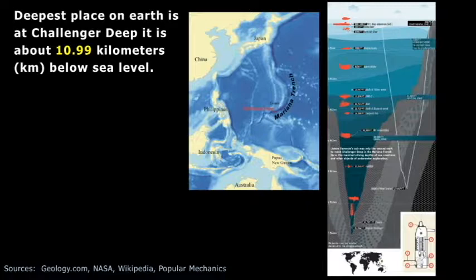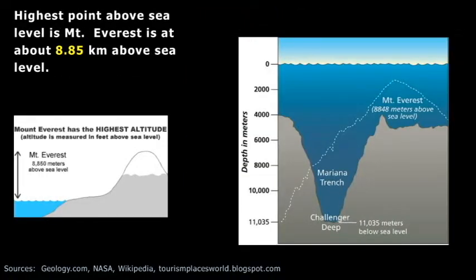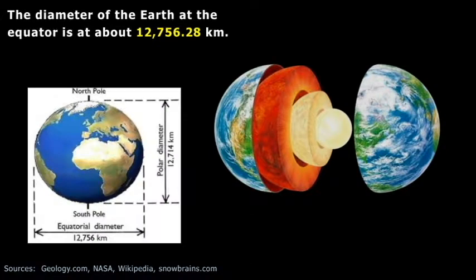The deepest place on Earth is at the Challenger Deep. It's about essentially 11 kilometers below sea level. The highest point above sea level, and I know people debate this, but whatever, the point is at this scale it's minuscule, but it's Mount Everest, and it's about 8.85 kilometers above mean sea level. And here's just a diagram to show you that compared with the Mariana Trench, which is where the Challenger Deep is located.